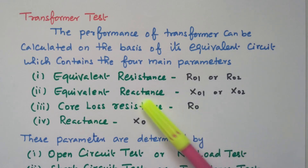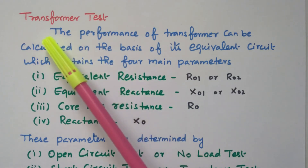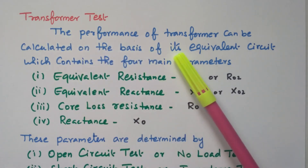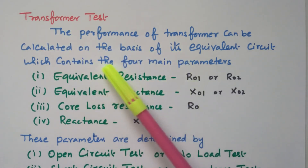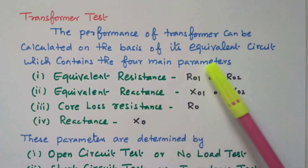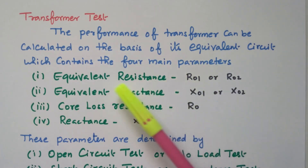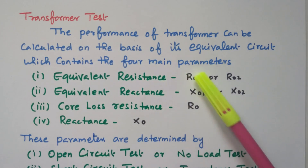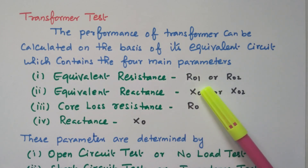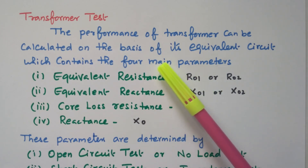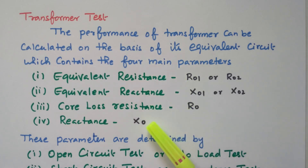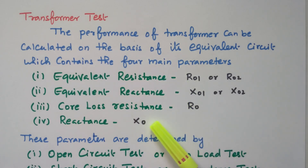Now we will go to the topic: transformer test. The performance of a transformer can be calculated on the basis of the equivalent circuit, which contains four main parameters. In order to draw the equivalent circuit, we need these four parameters for further analysis.